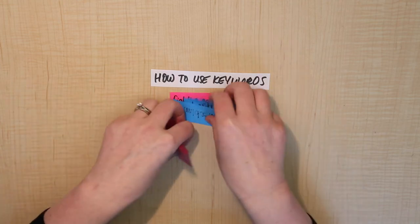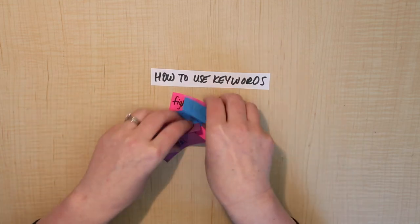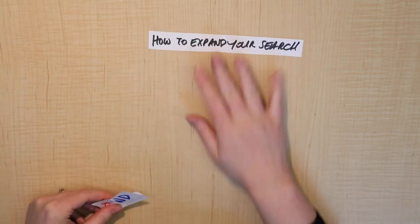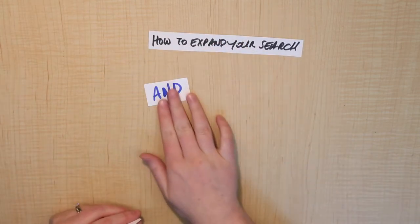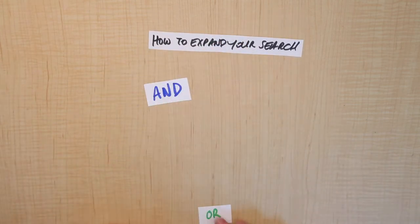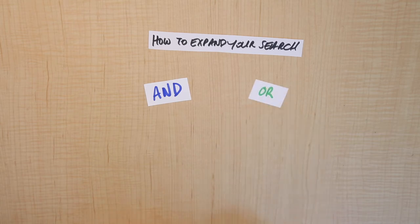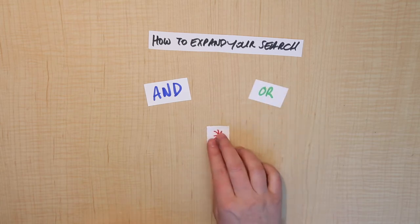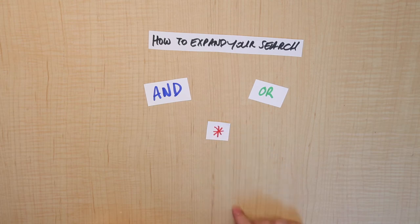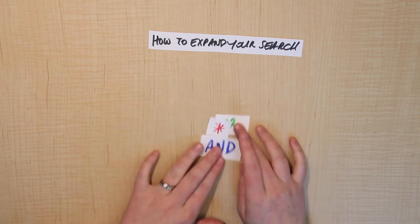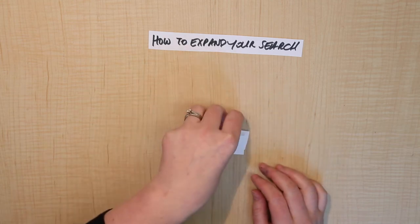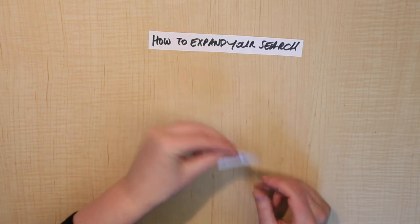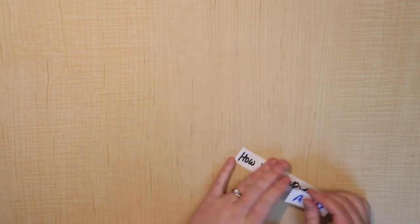After we did the basic version of that, we went ahead and learned how to expand our search. We used the word AND, and we used the word OR, and then we used truncation with the star, which is like a wild card. All those techniques give you more search results.